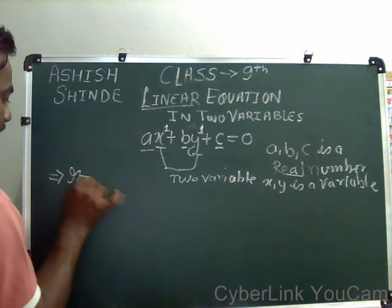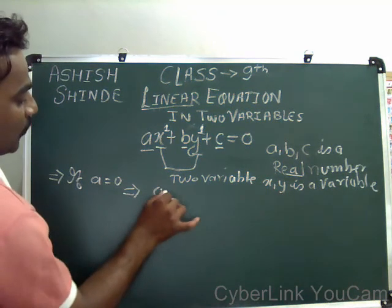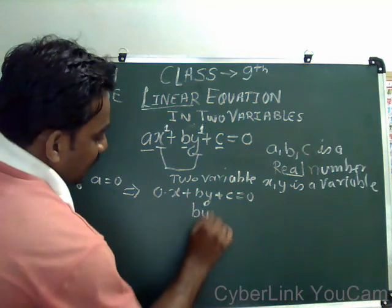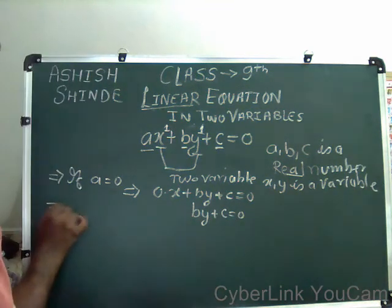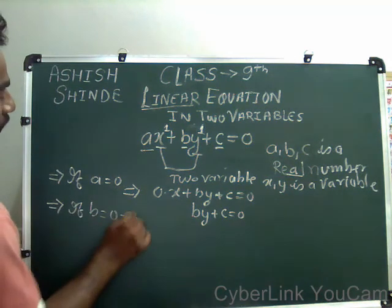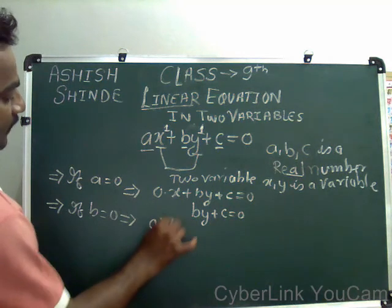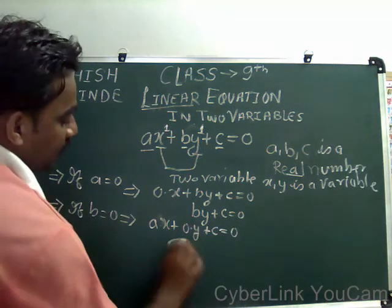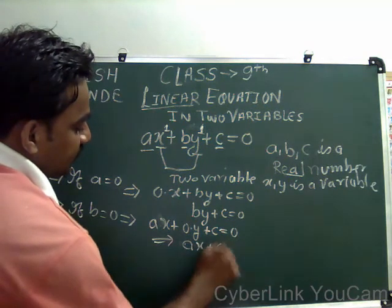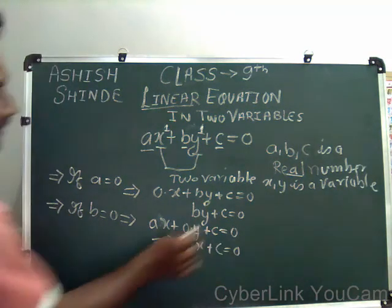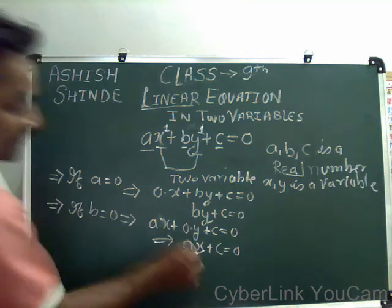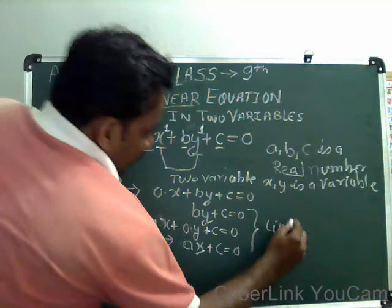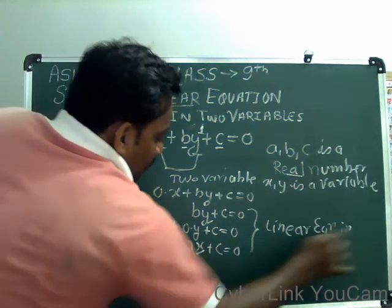If A equals 0, that implies 0 times X plus By plus C equals 0, then it will be By plus C equals 0. If B equals 0, that implies Ax plus 0·Y plus C equals 0, which gives Ax plus C equals 0. In both cases there is only one variable — Y or X — therefore this is called a linear equation in one variable.